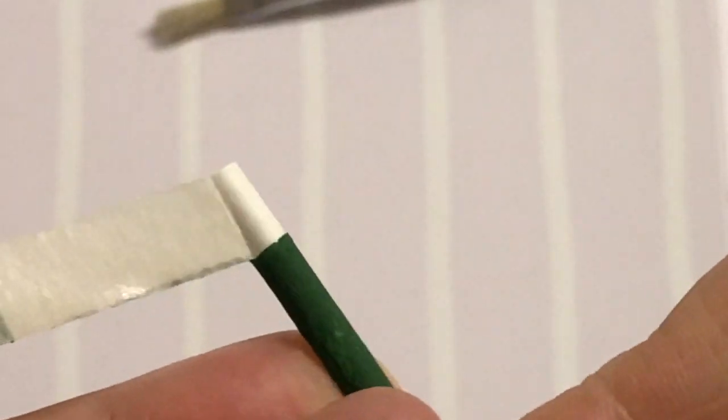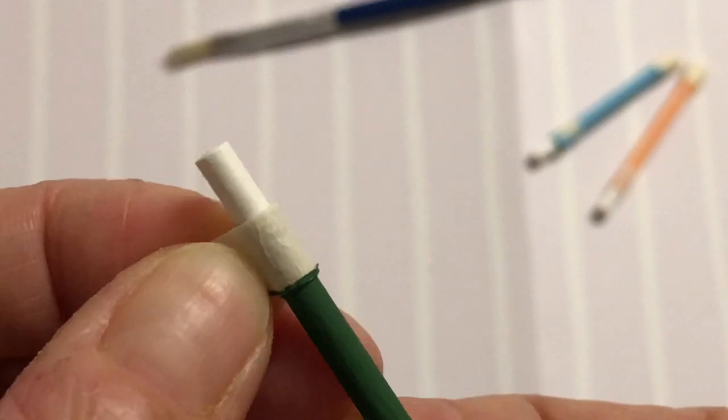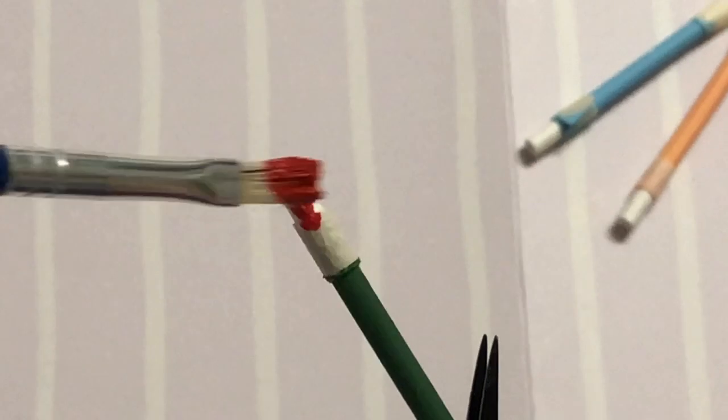When the paint has dried peel off the top tape and reposition under the exposed white cake pop stick. Now we can paint the rubber section a deep red.